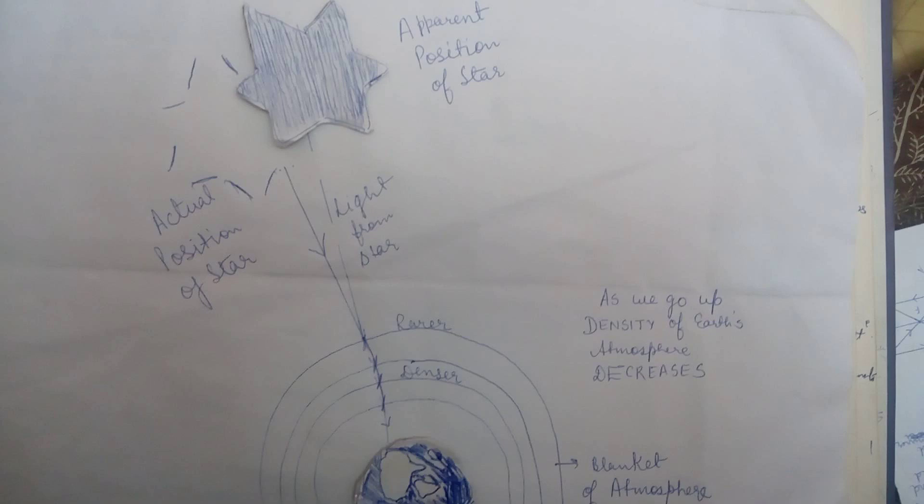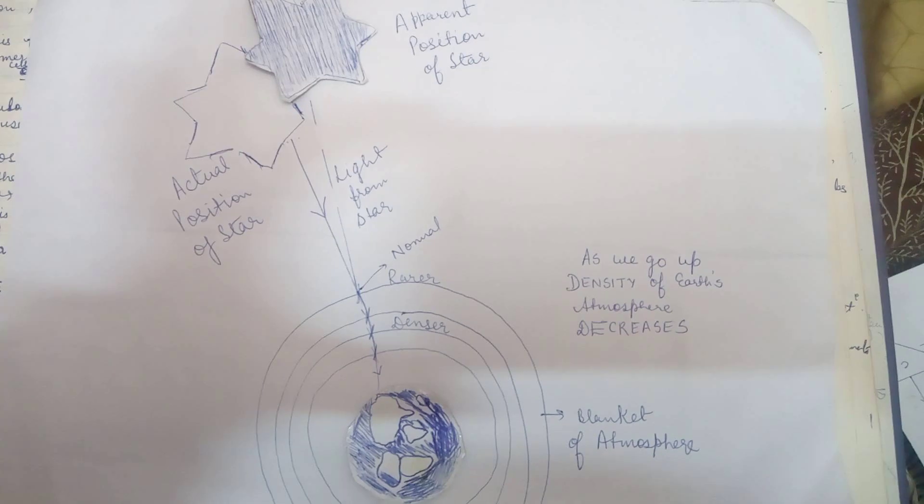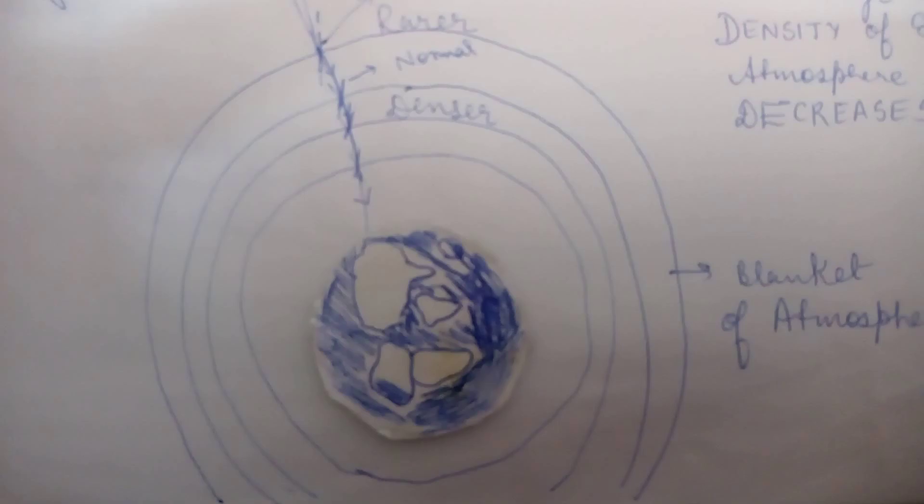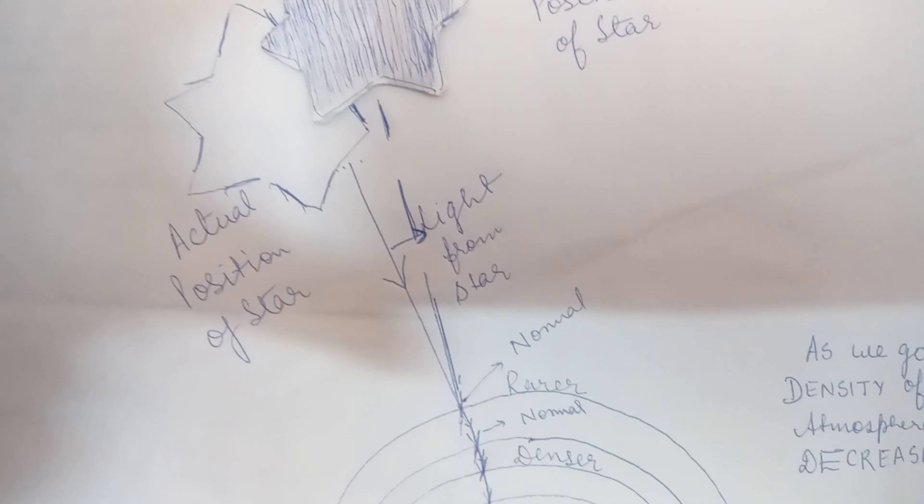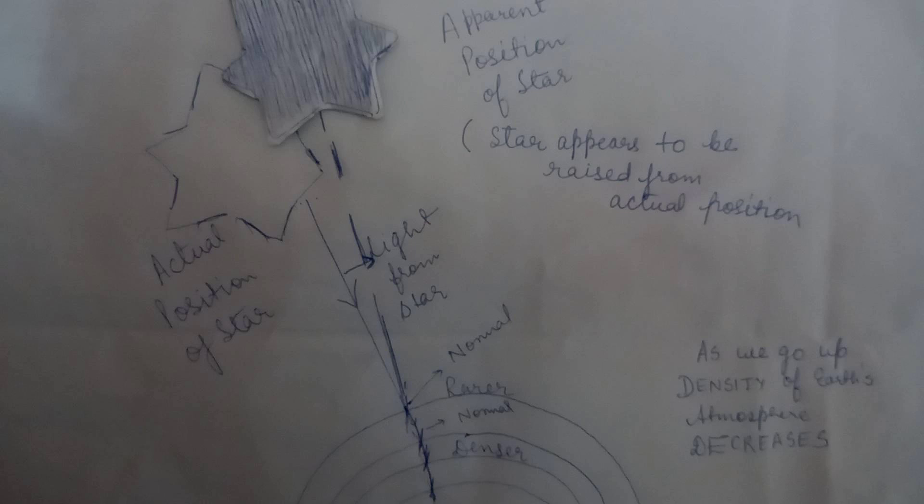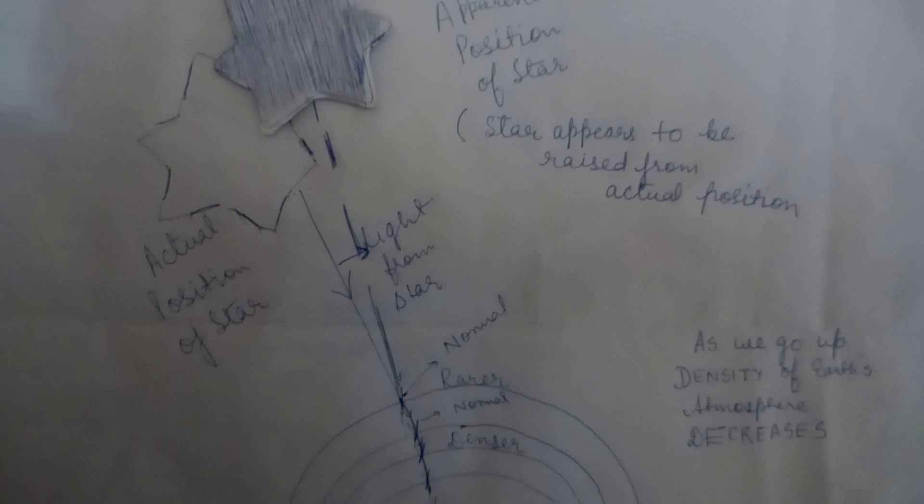This is called the apparent position of the star. So the star appears to be a bit rising as compared to its actual position.